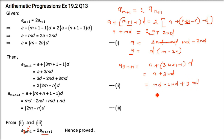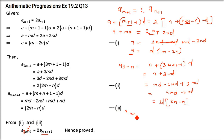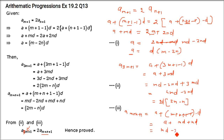I am replacing a with what we got previously. So we get md, giving 4md minus 2nd. And you can take 2 common, or take 2d common. So you get 2d(2m minus n). This is A sub (3m+1). Now coming to A sub (m+n+1): a + (m+n+1−1)·d, so you get a + md + nd. Now substitute a: md minus 2nd plus nd, giving 2md minus nd. So this is twice of (2md minus nd), which equals 2d(2m minus n). So A sub (3m+1) equals twice of A sub (m+n+1) — this is twice of A sub (m+n+1) and that equals A sub (3m+1).